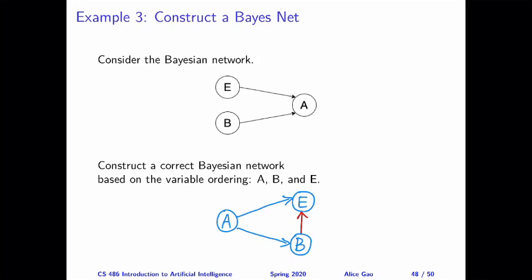And we want to construct an alternative correct network where we're using a different order. So A comes first, then B and E.